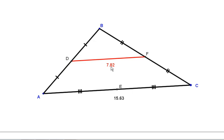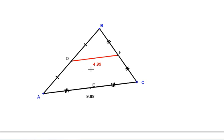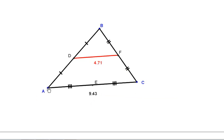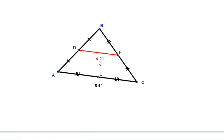We have 7.82 to 15.63, that's about double. 4.99 to 9.98, that's double. 4.21 to 8.41, that's about double.